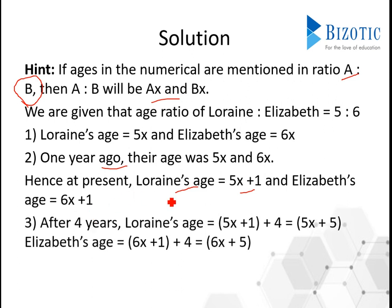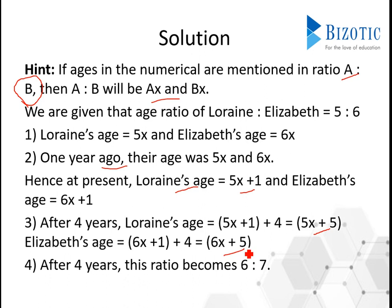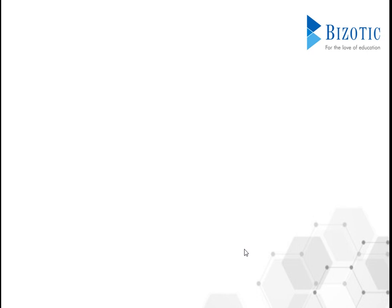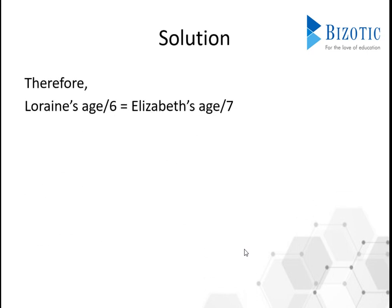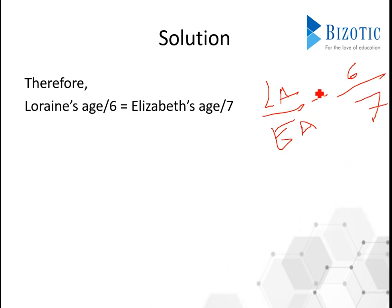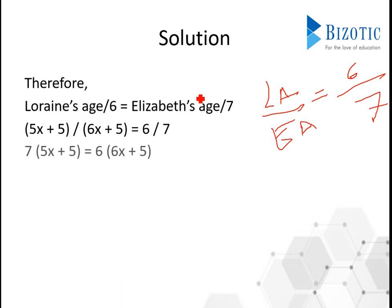After 4 years, Lauren's age will be 5x plus 5 and Elizabeth's age will be 6x plus 5. After 4 years, the ratio is given as 6 is to 7. So Lauren's age divided by Elizabeth's age equals 6 by 7. That gives us 5x plus 5 divided by 6x plus 5 equals 6 by 7. Now simple calculations: you multiply Elizabeth's age by 6 and Lauren's age by 7, and you will find x equals 5.